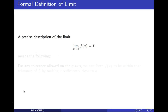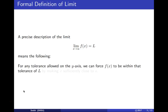We can make this precise. The limit as x approaches a of f of x equals L means that for any tolerance allowed on the y-axis where f of x is, we can force f of x to be within that tolerance of L by making x close to a. If we're trying to hit L, no matter how small the error you insist on, we can make sure f of x is within that tolerance of L. f of x and L will be forced to be close.